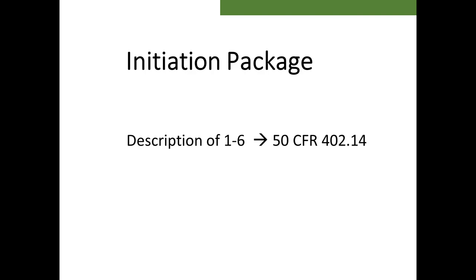Official listing documents and designations of critical habitat can be found in the Federal Register. These six items required to initiate consultation are explained fully in 50 CFR 402.14 under Section C.